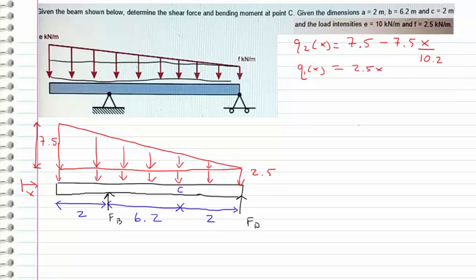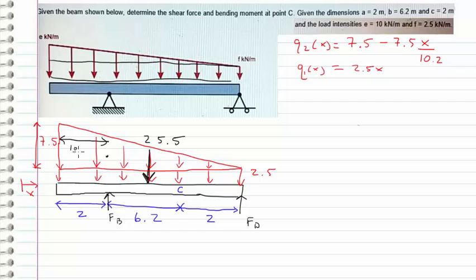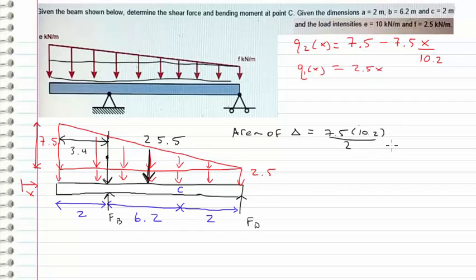First we want to find what the total force of each distributed load is and where it's applied. For the rectangle it's easy — it's applied right in the middle, and it's just the area: 2.5 times 10.2 gives us 25.5 kilonewtons. For the triangle, the centroid is one-third of the length from the highest point, so we know that's 10.2 divided by 3, which is 3.4. The total force is 7.5 times the length divided by 2, giving us 38.25 kilonewtons.